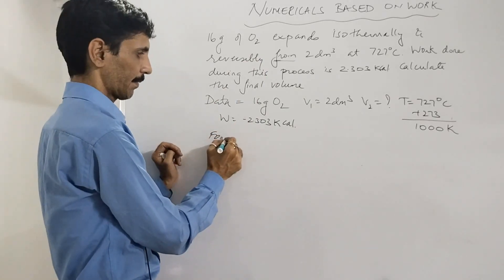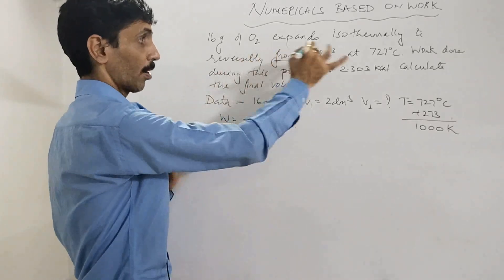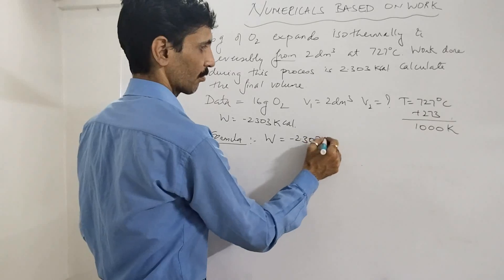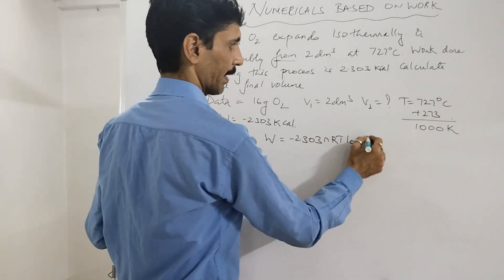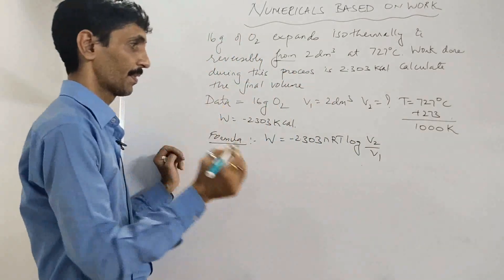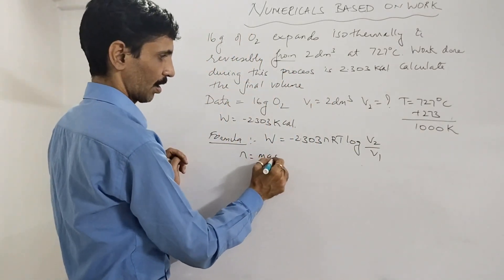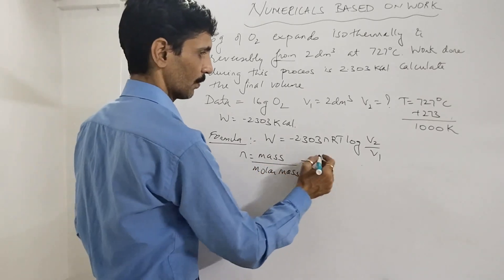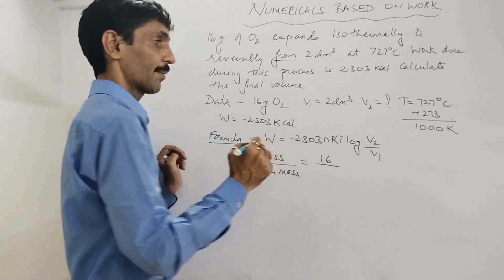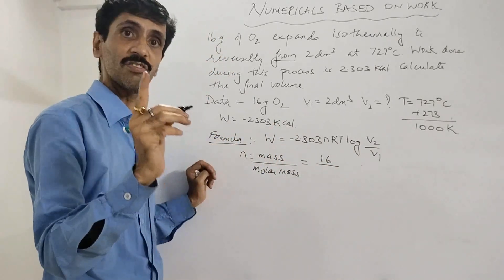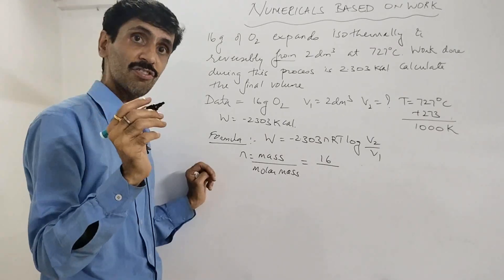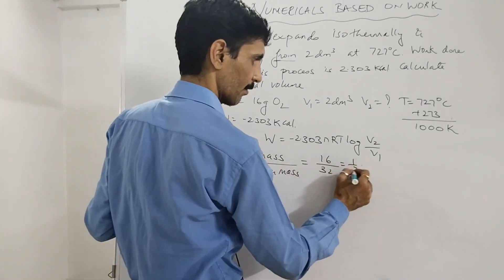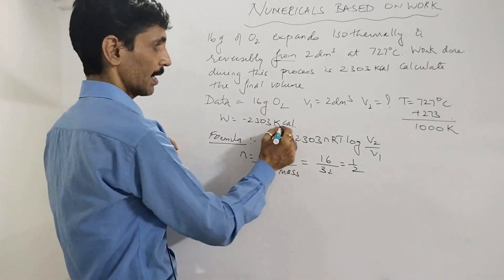There is no constant pressure here, and since we are working in terms of volume, the formula is W = −2.303 nRT log₁₀(V2/V1). Here n = moles = mass / molar mass. Mass is 16 g; oxygen is diatomic so molar mass = 16 + 16 = 32. Therefore n = 16/32 = 0.5.